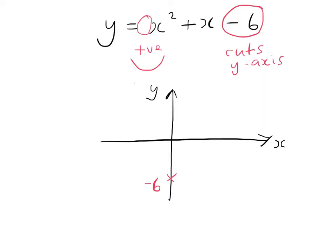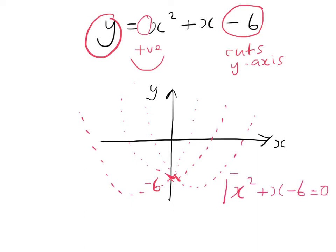At this stage, the only information we've got is where it cuts the y-axis. There are a number of different curves that could fit here. We know it's a happy curve — it could have its minimum point there, or be slightly to the right, or slightly to the left. So we need to find out where it cuts the x-axis, where the y-coordinate will be 0. We have to solve this equation to find the x values where y equals 0.